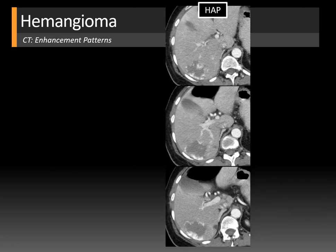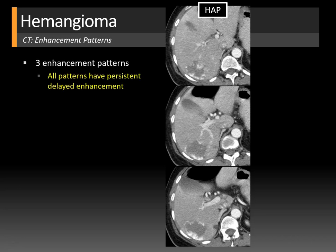Contrast is much more specific for hemangioma diagnosis, and there are three major enhancement patterns. One key feature common to all patterns is persistent delayed enhancement — on a delayed phase image, a hemangioma should still be enhancing. Hemangiomas should never wash out normally.